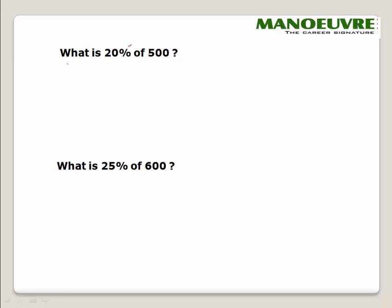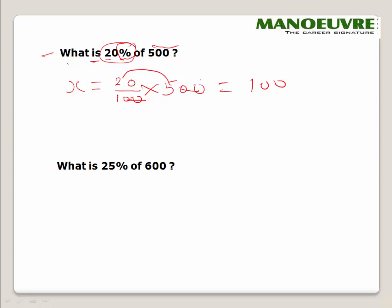Let's look at a question: What is 20% of 500? Converting to mathematical form: x = 20% × 500 = 20/100 × 500. The 100 and one zero of 500 cancel, giving 5 × 20 = 100. So 20% of 500 is 100.